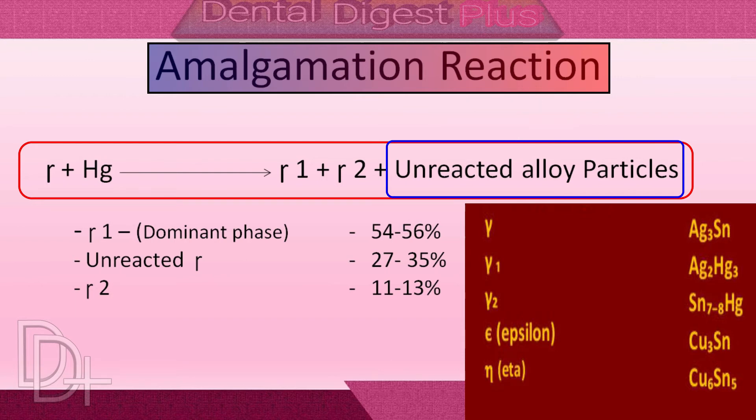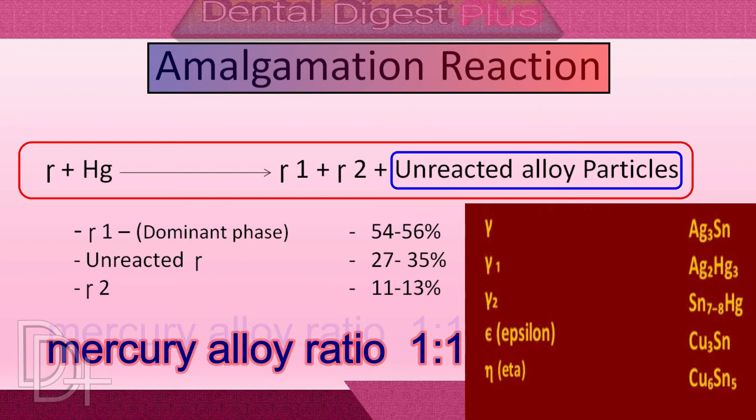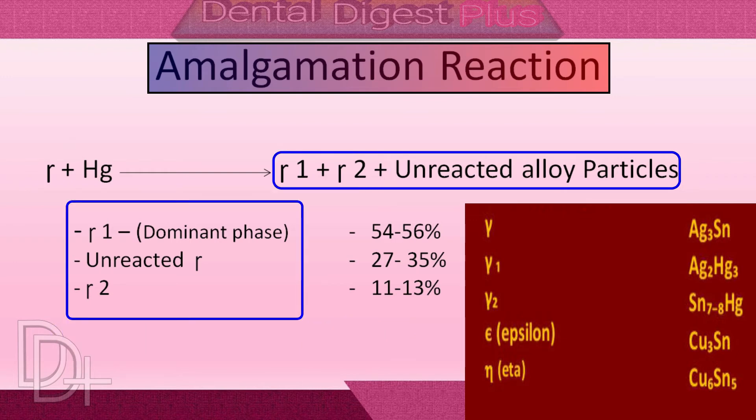That is because we are using a mercury-alloy ratio of 1:1, so mercury is insufficient to wet all the alloy particles, and some amount of unreacted gamma particles remains, which will form the core of the set amalgam. So, as you can see, at the end of the reaction, gamma-1, gamma-2, and unreacted gamma particles are found in the set amalgam.